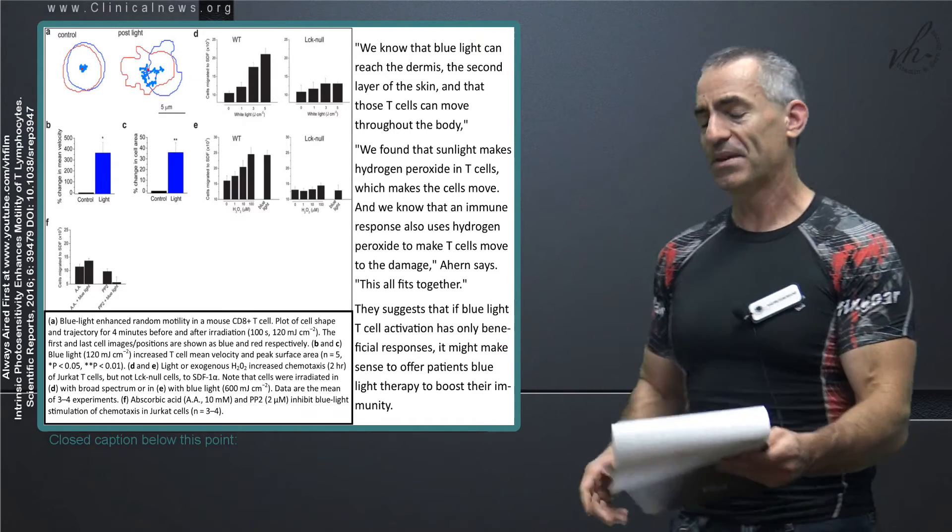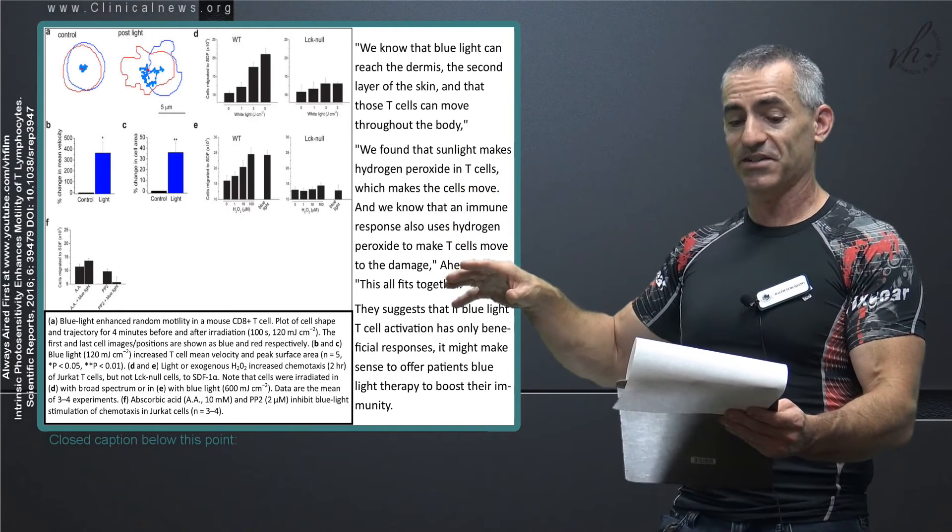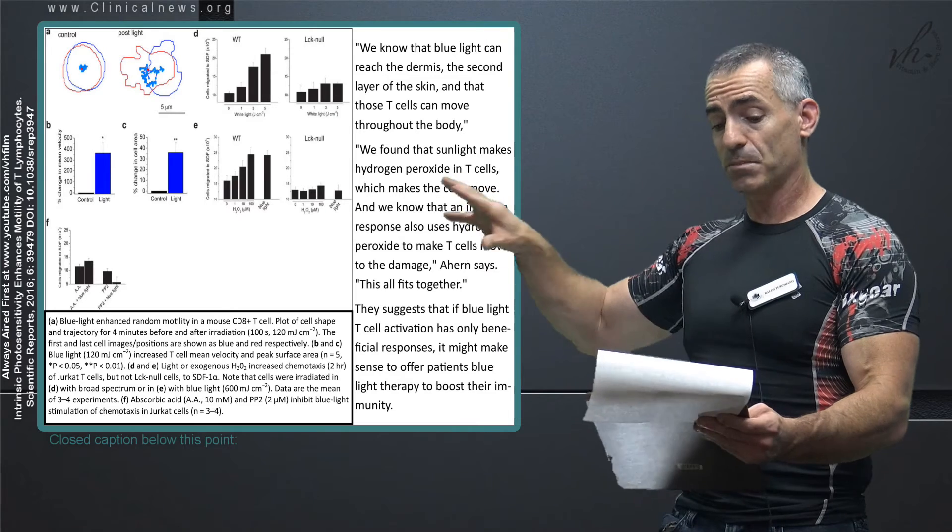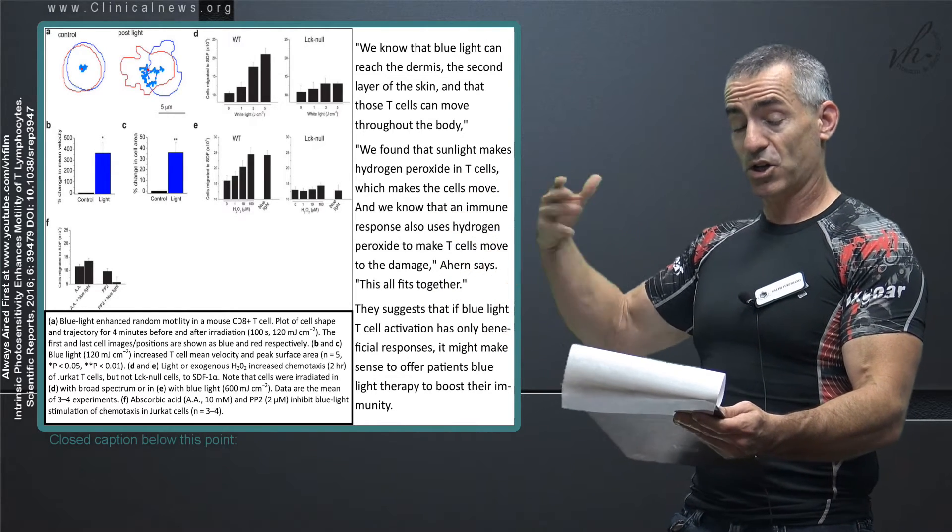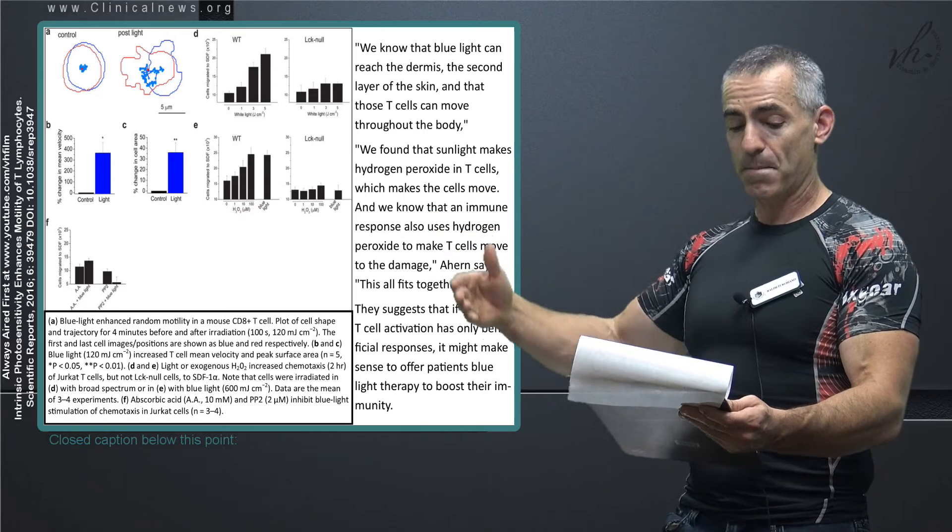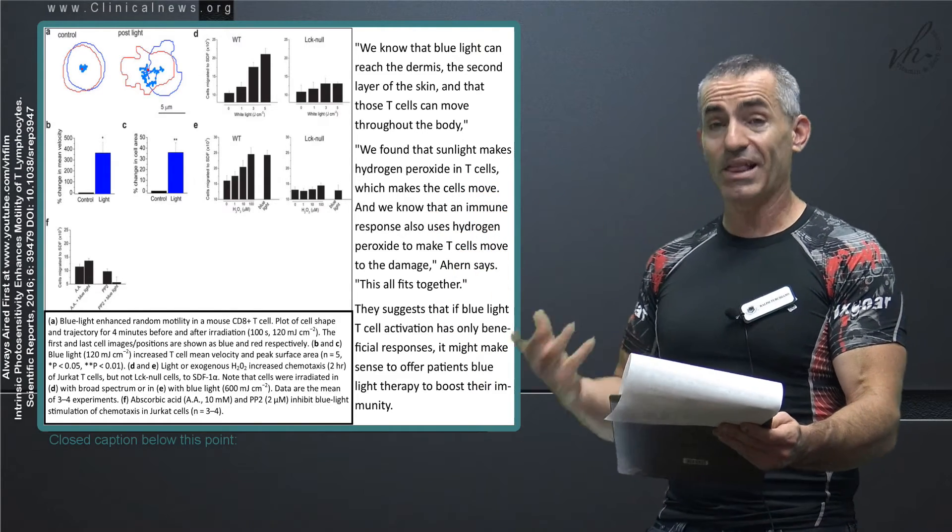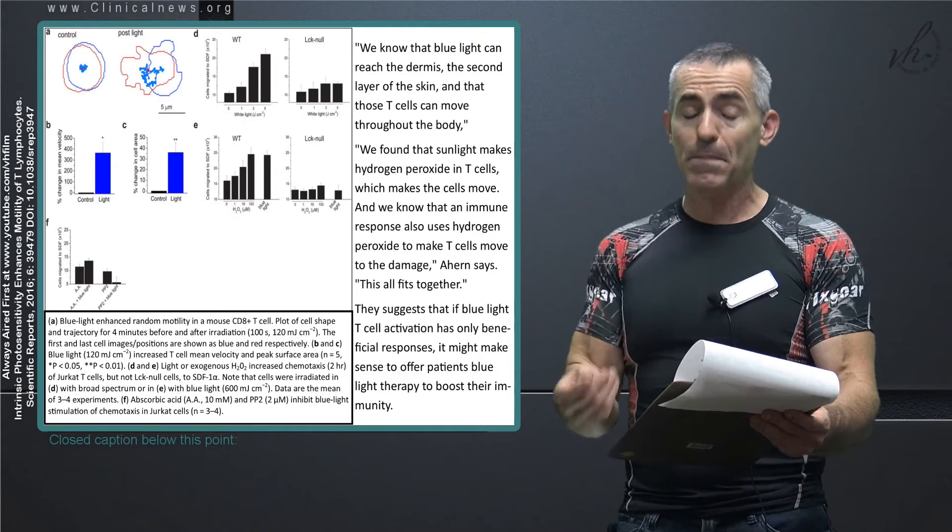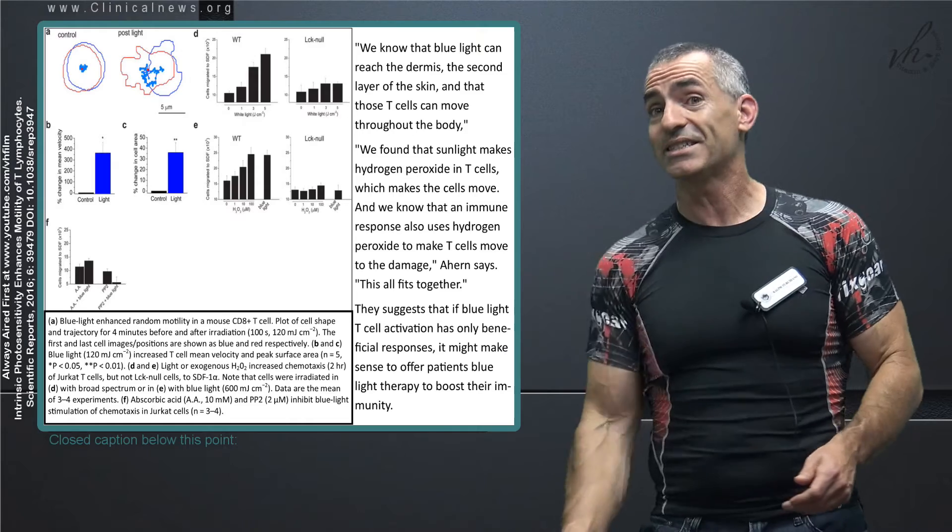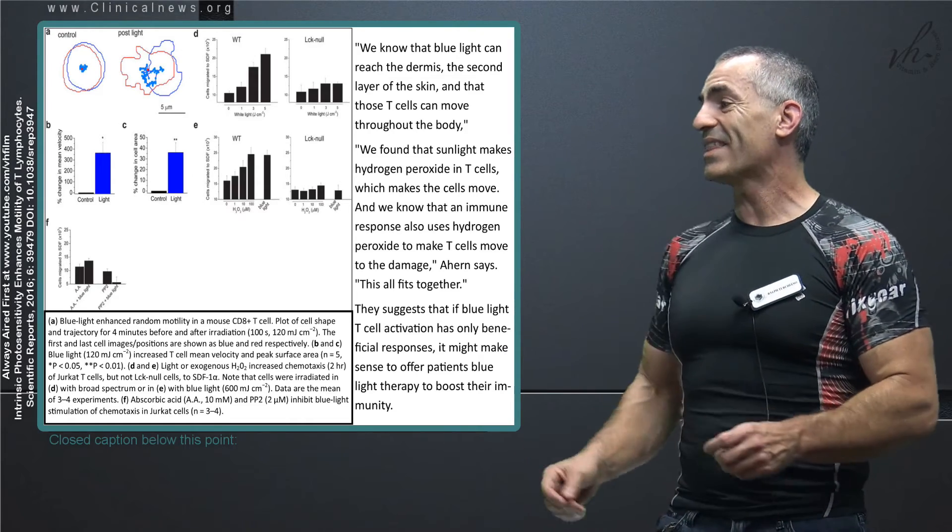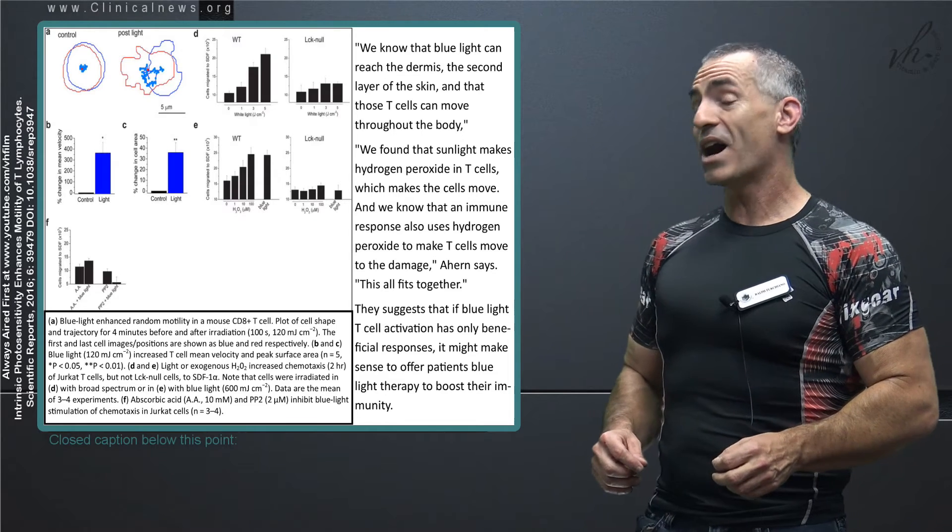Now let's look at this chart to give you an idea. You see the chart in the upper corner there? You see the control, that's basically just T cells hanging around that do nothing. Post the blue light, then they become active. Then if you look at part C right there, control and the activity, basically what happens with blue light, meaning velocity and cell area, they become alive. It wakes them up just like it wakes people up. It also wakes your immune system up, but that's incredible.